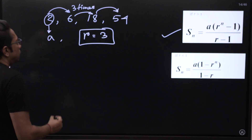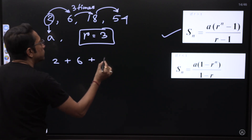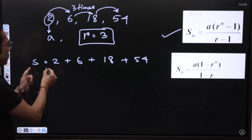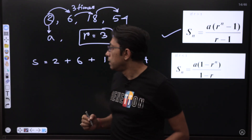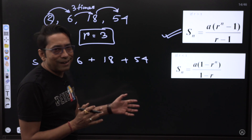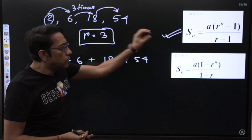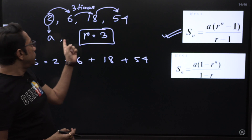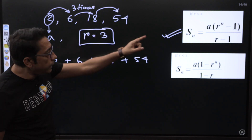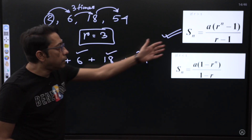The formula is: if we want to add the terms 2, 6, 18, and 54 — the summation S equals A into R to the power N minus 1, divided by R minus 1. Here A is the first term, which is 2. R is the common ratio, which is 3. N is the number of terms: 1, 2, 3, 4 — so N equals 4.